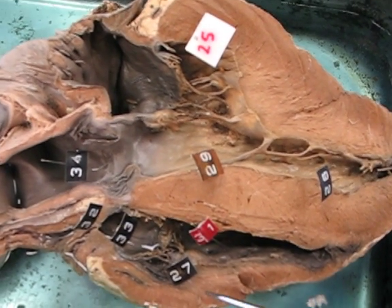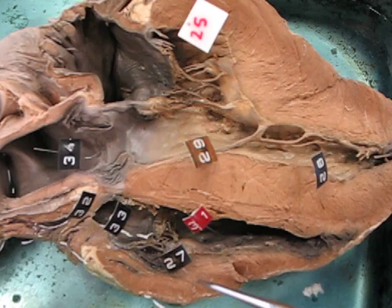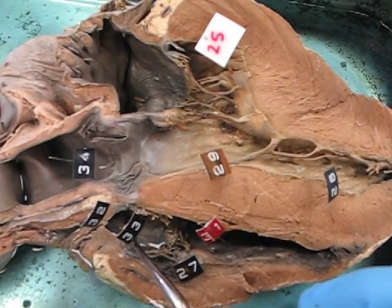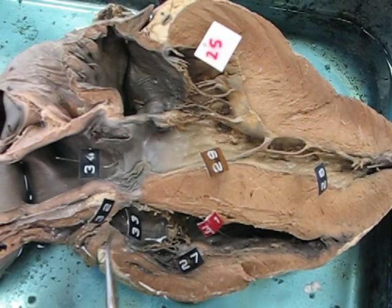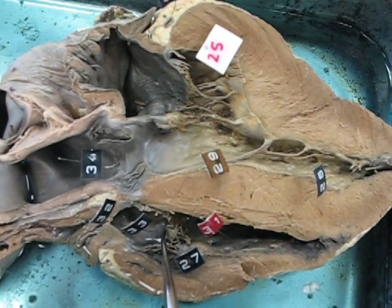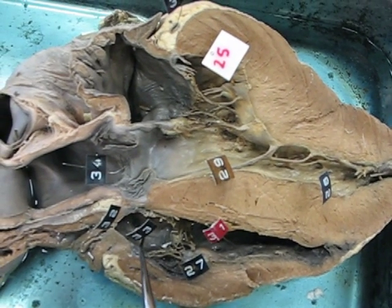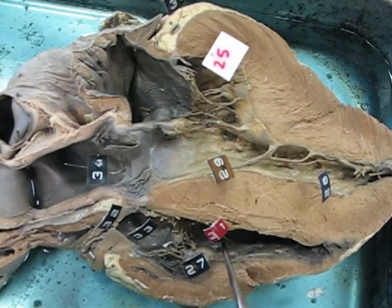The myocardium, right ventricle, right auricle. There's a space here. Number 33 is tagging the mitral, the tricuspid valve that connects the right auricle with the right ventricle.